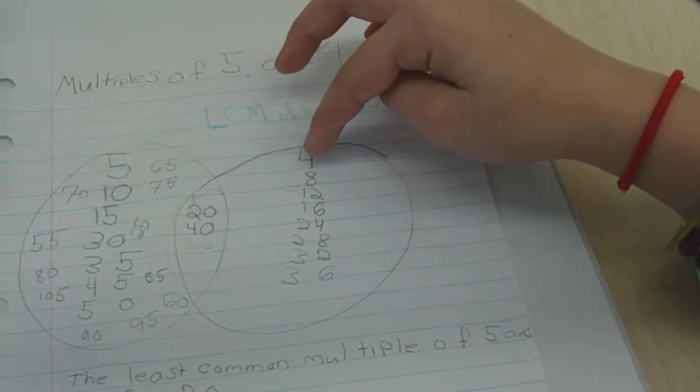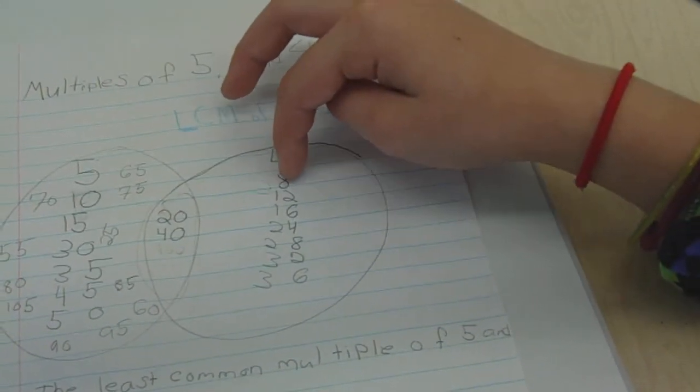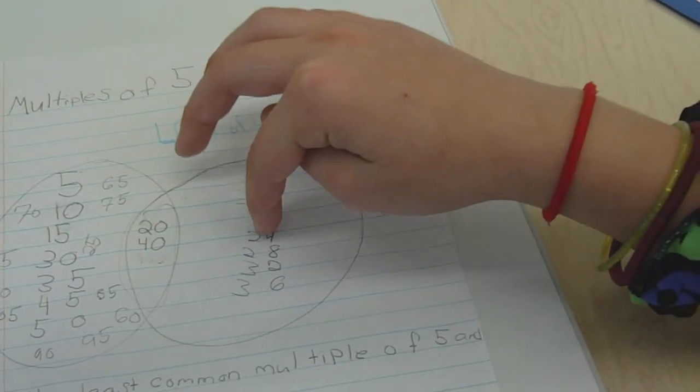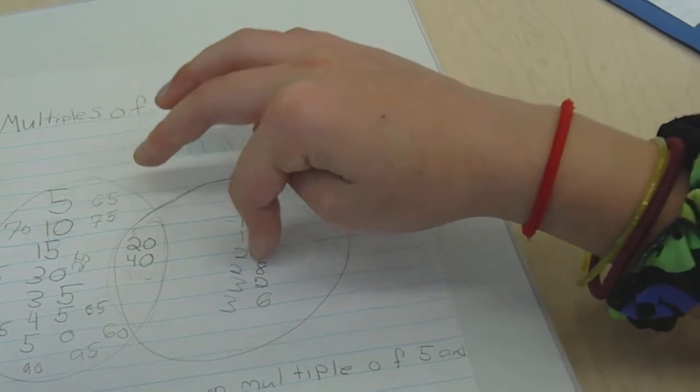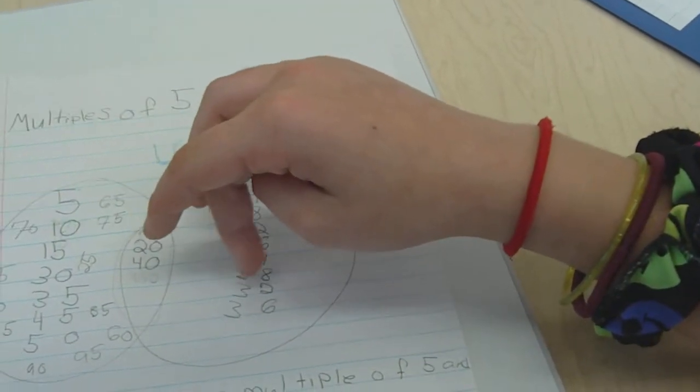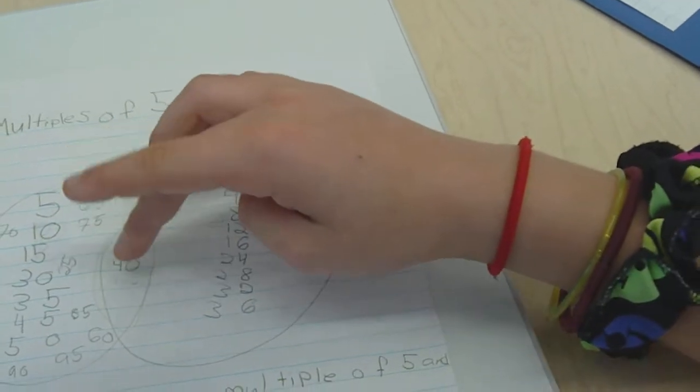Yeah, so then you went to your multiples of 4. Multiples of 4 is 4, 8, 12, 16, 20, 24, 28, 32, 36, and 40.